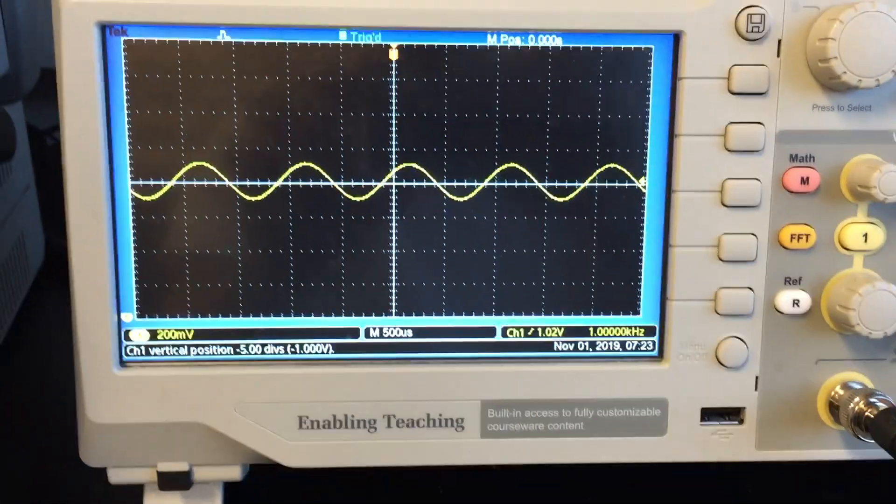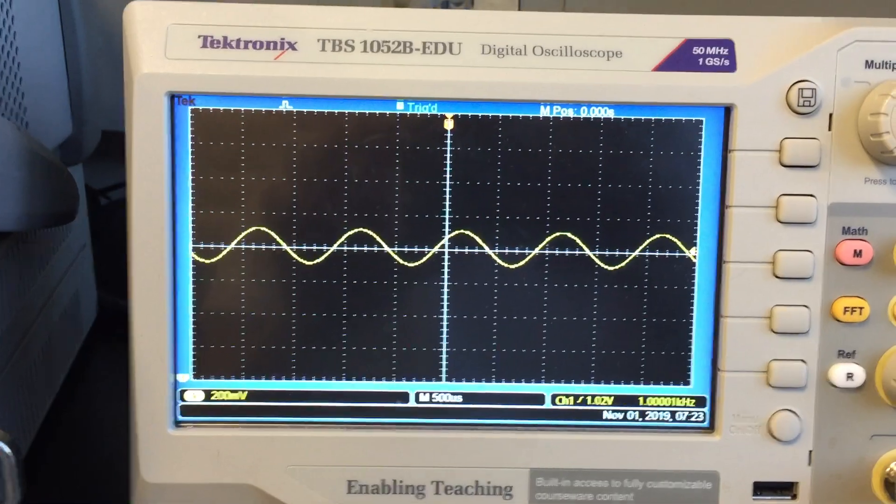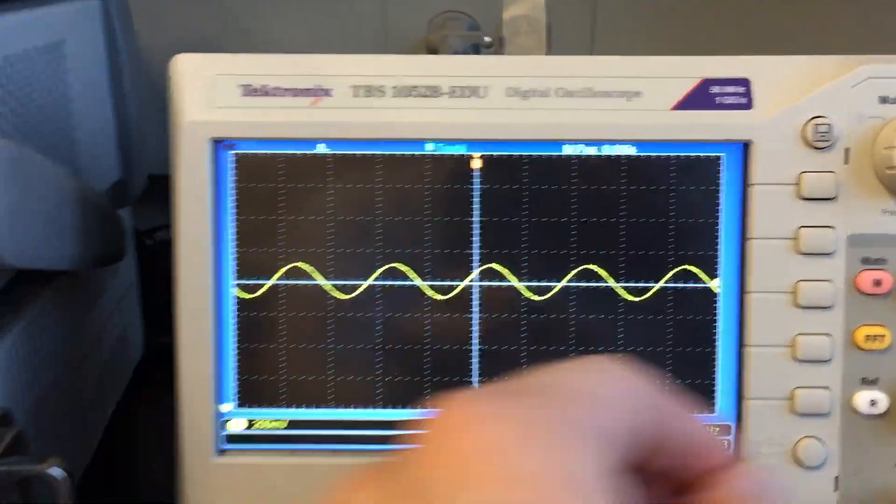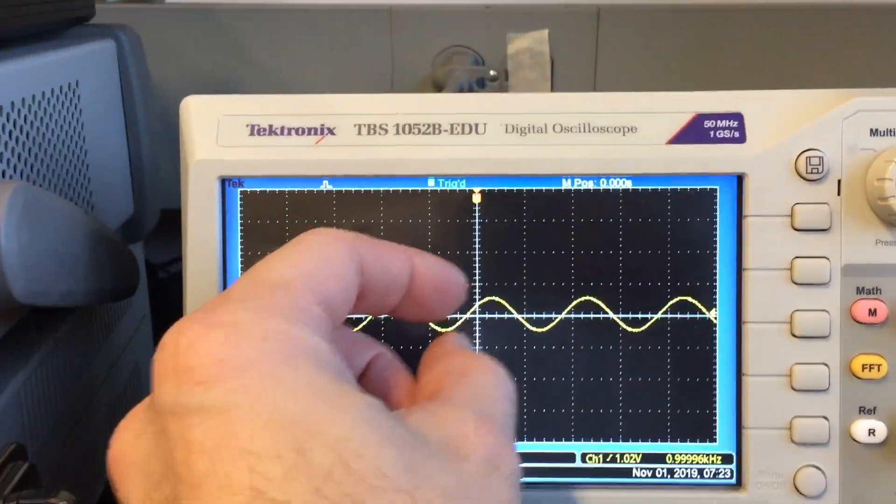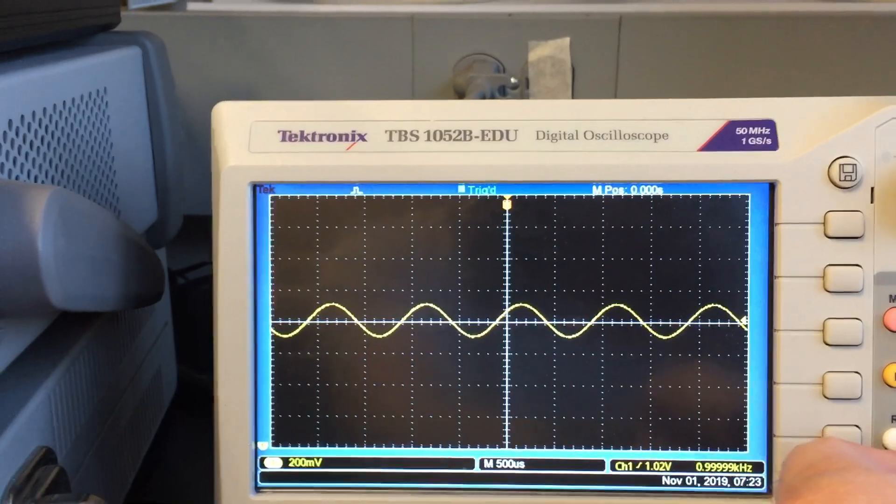So notice sine wave is centered in the screen, and it started to trigger. And that's because when we changed the scale, we made the sine wave at least one division, and it's triggering now.